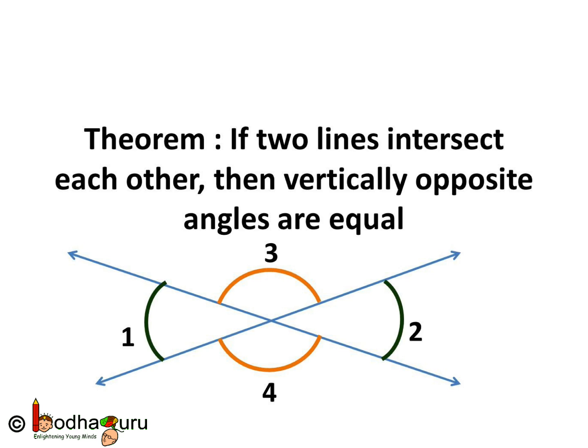And so this was the proof of the theorem. If two lines intersect each other, then vertically opposite angles are equal.